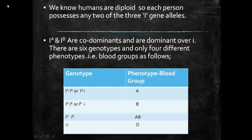This is all about multiple alleles with the example of the ABO blood group system. We will explore the basic concept of the ABO blood group system in more detail in the next video. Thank you so much for watching — if you like this video, please like, share, and subscribe to my channel.